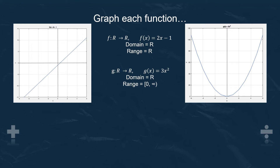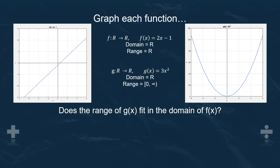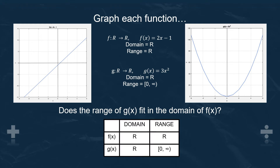For g of x, we have 3x squared. The domain is all real numbers, but we can see from the graph that the range is 0 to infinity — 0 being included, infinity not being included. Does the range of g of x fit into the domain of f of x? We can test that out with a little table, which is very helpful. We can see that the range of g of x is contained in the domain of f of x, as 0 to infinity is included in all real numbers.